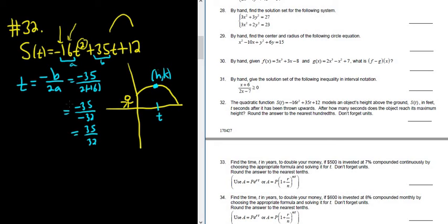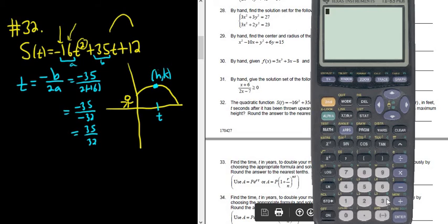So let's put this in the calculator and see what we get. So 35 divided by 32, that's equal to 1.09